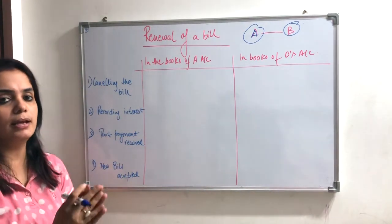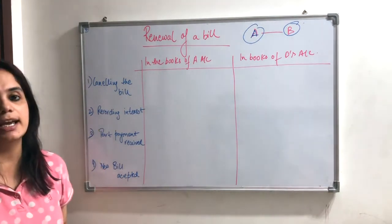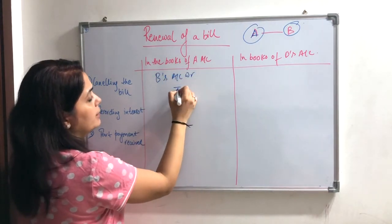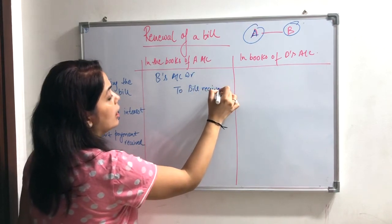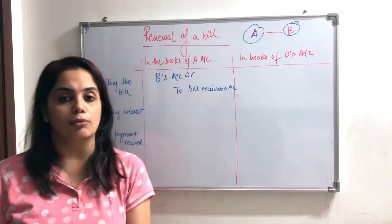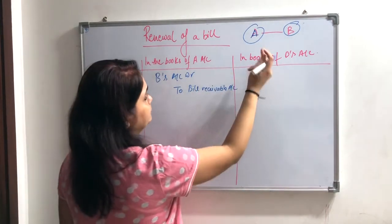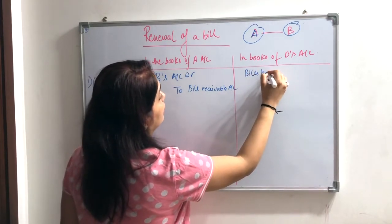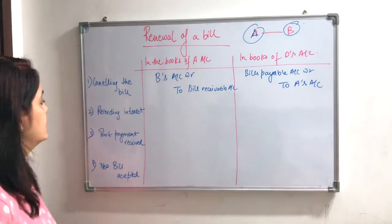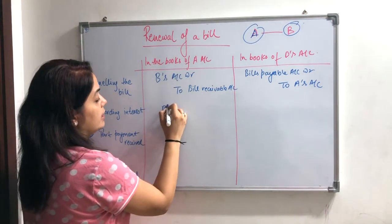First of all, we pass the journal entry for our previous bill, which has not yet been paid. The drawee says to cancel it. So the cancellation entry will be: Drawee's account debited to Drawee — that is, B's account debited to Bills Receivable account. If you remember, we will pass the entry to Drawee's account.